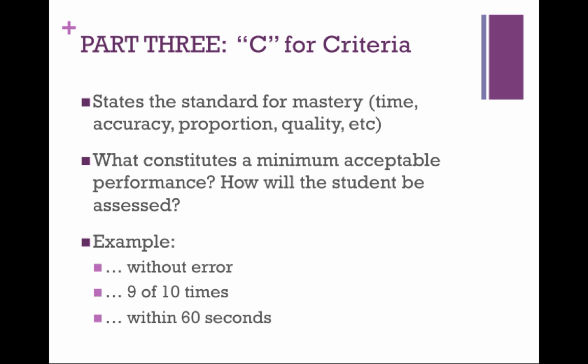Finally, the criteria for a learning outcome states what the standard is for mastery. Does a student need to get 50% right? 75%? 90%? Think about what constitutes a minimum acceptable performance — is 50% enough, or does it have to be 100%? And how will you assess this? For example, will the students need to do it without error, 9 of 10 times, or within 60 seconds?